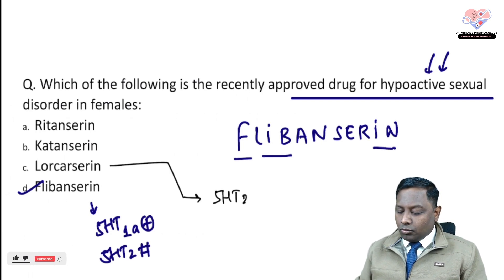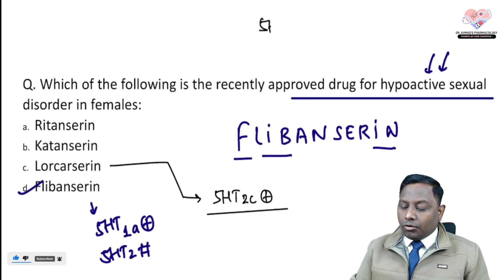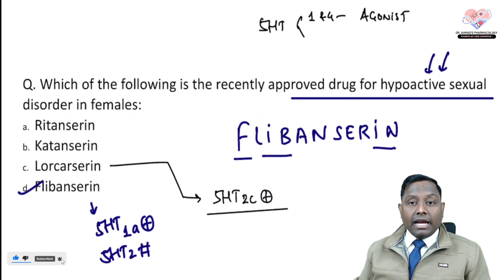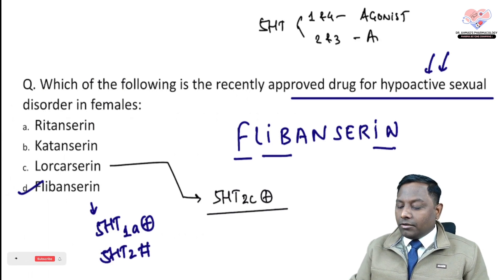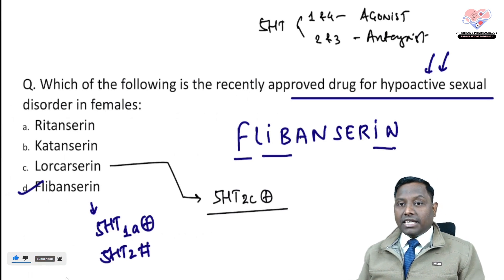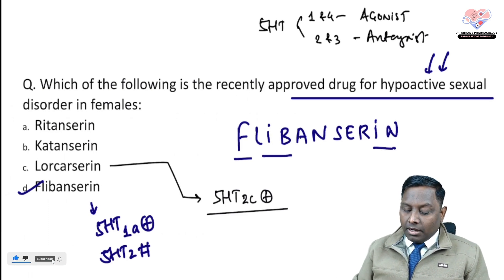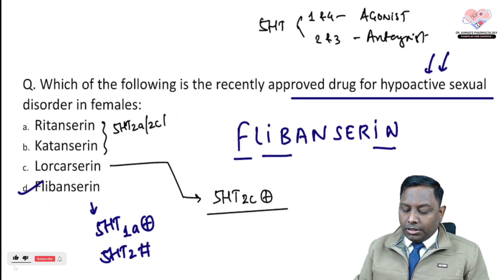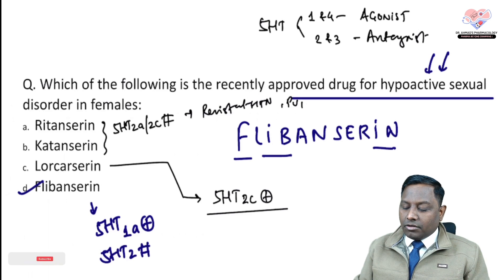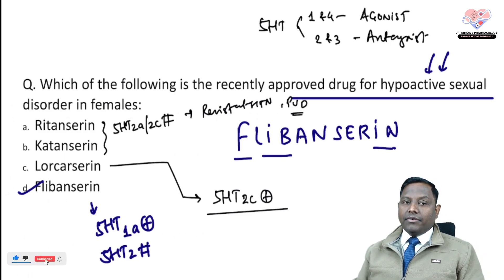Flibanserin is also a 5-HT2C agonist. According to the serotonin rule of five: receptors 1 and 4 — we use agonists; receptors 2 and 3 — we use antagonists. However, this is an exception. Ketanserin and ritanserin are 5-HT2A/2C blockers and can be utilized in resistant cases of hypertension and peripheral vascular diseases like Raynaud's syndrome.